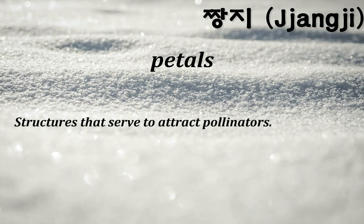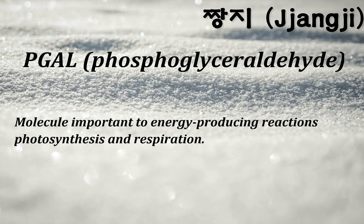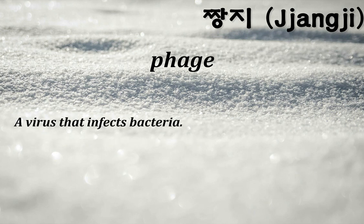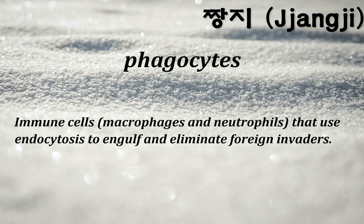Petals: structures that serve to attract pollinators. PGAL (phosphoglyceraldehyde): a molecule important to energy-producing reactions in photosynthesis and respiration. Phage: a virus that infects bacteria. Phagocytes: immune cells — macrophages and neutrophils — that use endocytosis to engulf and eliminate foreign invaders.